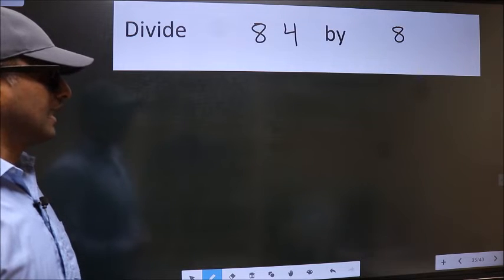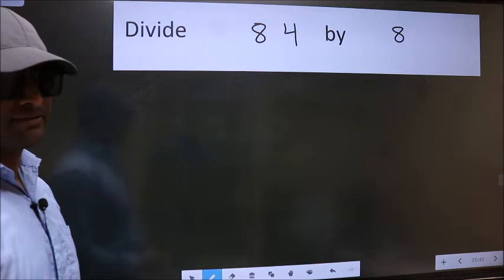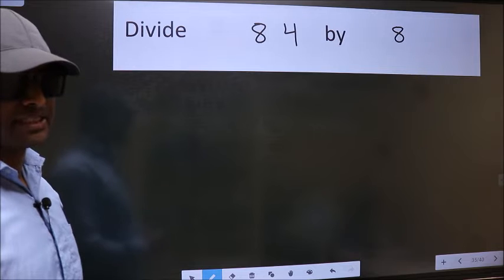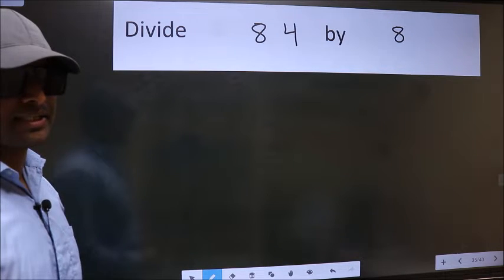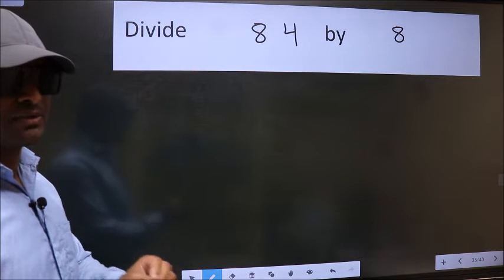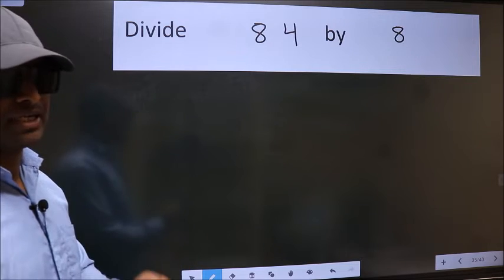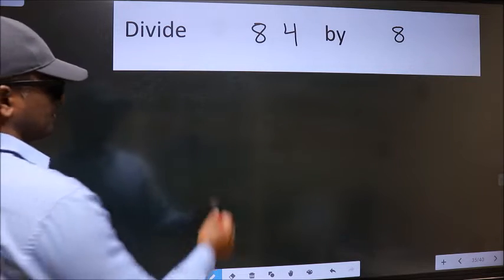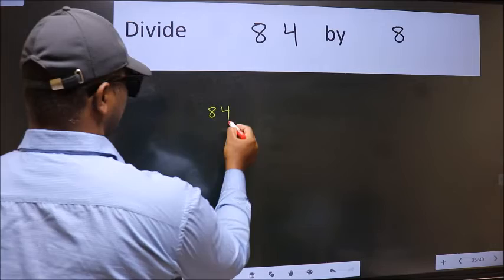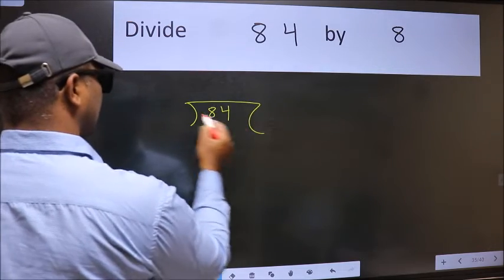Divide 84 by 8. While doing this division, many do this mistake. What is the mistake that they do? I will let you know, but before that we should frame it in this way: 84 here, 8 here.